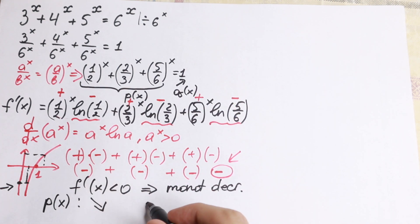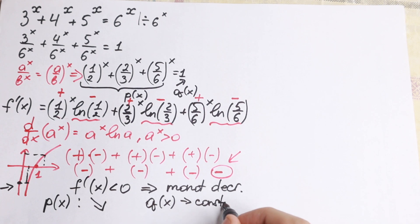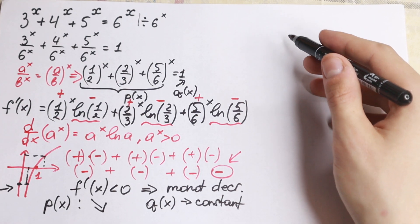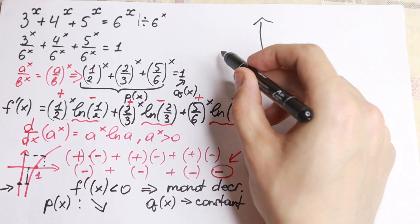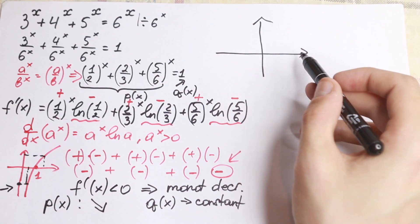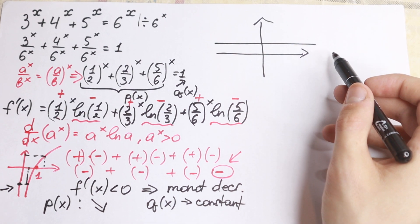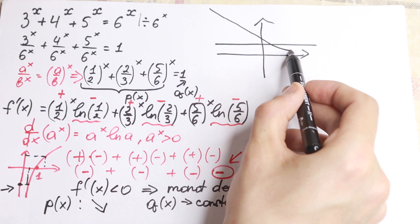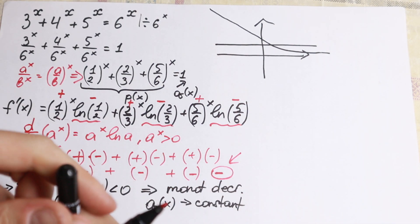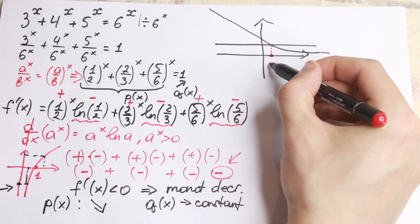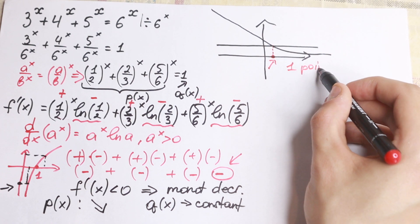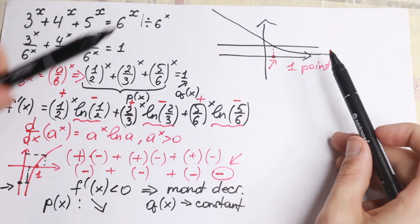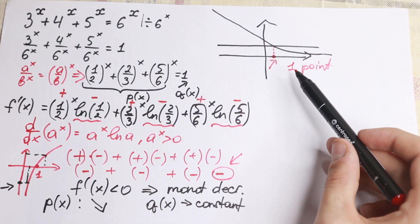Now what about q(x)? We know that q(x) is a constant equal to 1. So we have a monotonic decreasing function p(x) on the left hand side and a constant on the right hand side. If we draw the graph, we have the horizontal line q equal to 1 and a monotonic decreasing curve. As you can see there is only one point of intersection, which shows us there will be only one root.